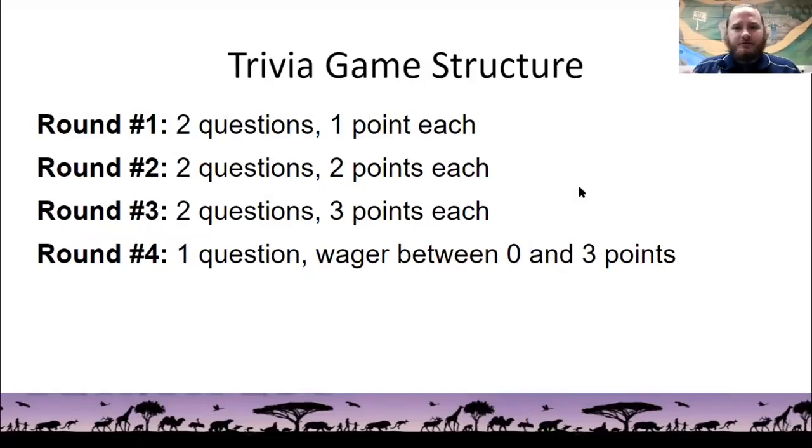So, as a reminder, or for those of you who are new, to explain the game structure, there are four rounds. Each round has two questions. In round one, that question is worth one point. Round two, they're worth two points. Round three, three points. And then in round four, there is one question on which you can wager between zero and three points. And if you get it right, you get all those points. If you get it wrong, you lose all those points.